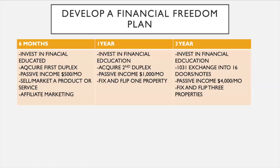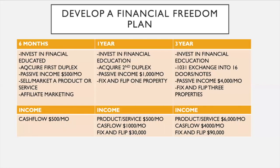By year three you're producing a passive income of nearly $4,000 a month. At this point your plan may also include fixing and flipping one property per year. Our income goal at six months started at $500 a month — just two doors at $250 per door in cash flow. In year one we wanted more cash flow and also to start producing business income through a product or service, with a goal of $500 from that income stream within the first year.